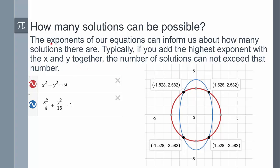Depending on our exponents, they give us some insight into how many solutions our equation can have. If you add up the exponents for the x and y values — like x squared and y squared, that's four — that number is the maximum number of solutions you can have; you can't exceed it. So with x squared and x squared, the maximum number of solutions is four, though that doesn't guarantee there will be four.